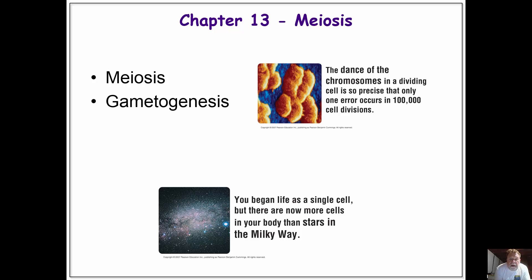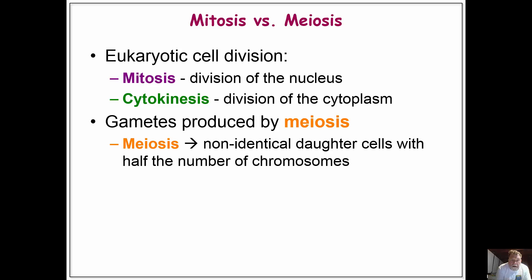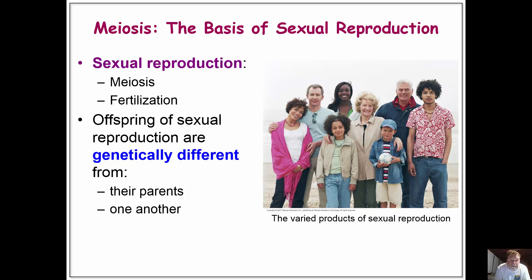Hello and welcome to chapter 13 on meiosis. We're going to be covering meiosis and gametogenesis — basically eukaryotic cell division. Mitosis is the division of the nucleus, and cytokinesis is the division of the cytoplasm. Mitosis is basically growth and cell division. Gametes are only produced by a special type of cell division called meiosis, where we get non-identical daughter cells with roughly half the number of chromosomes, or one set of chromosomes.